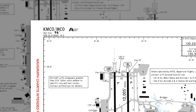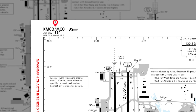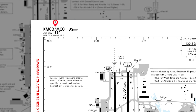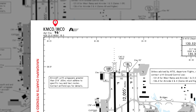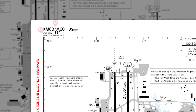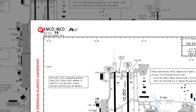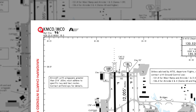We're looking at number one, and that's the ICAO slash IATA information. In this particular case, Kilo Mike Charlie Oscar slash Mike Charlie Oscar, or MCO. Number two is the airport elevation, sitting at 96 feet.